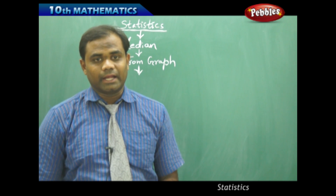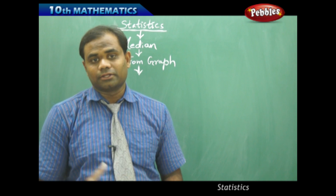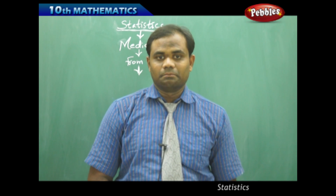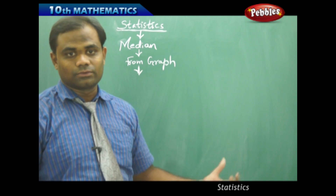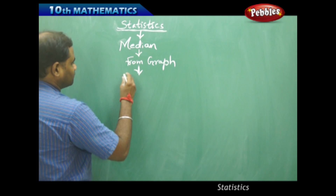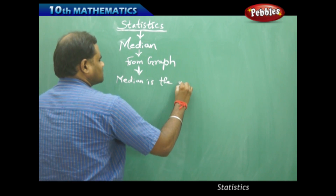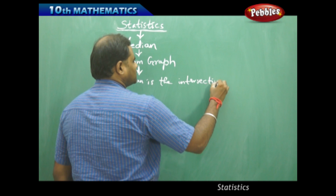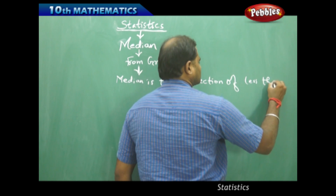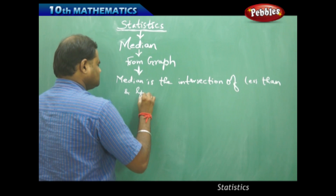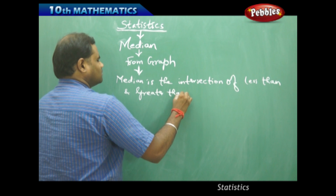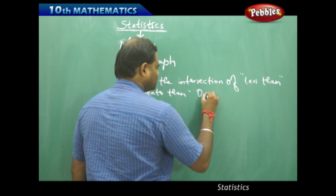Now that we have discussed about median and the graphs connecting the less than and greater than cumulative frequency graphs, median is also associated with their respective graphs. How do we calculate the median from the less than and greater than cumulative graphs, or the less than and greater than ogive curves? It is identified that from the graph, median is the intersection of less than and greater than ogive curves.